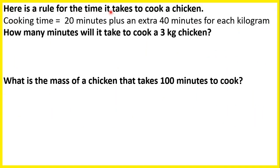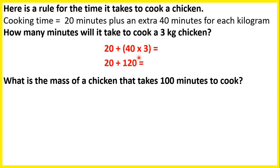Here is a rule for the time it takes to cook a chicken: cooking time equals 20 minutes plus an extra 40 minutes for each kilogram. How many minutes will it take to cook a 3 kilogram chicken? So we have 20 minutes plus 40 minutes for each kilogram, that's 20 plus 40 times 3. Now 40 times 3 is 120, so if we add that to 20 minutes, we get 140 minutes.